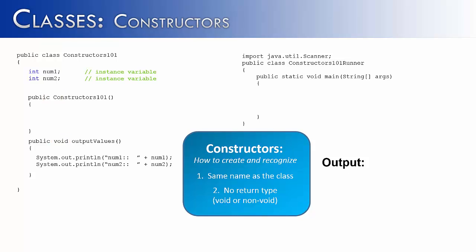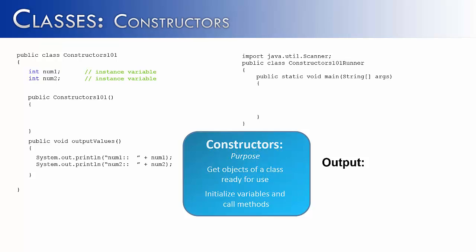Now that we understand how to recognize constructors, let's talk about why have constructors in the first place. Their purpose is to get objects of a class ready for use. Anything that an object needs to get ready is going to happen inside of the constructor — that's going to happen in two ways: it's going to initialize variables, which we'll spend most of our time on, and it's going to call methods.